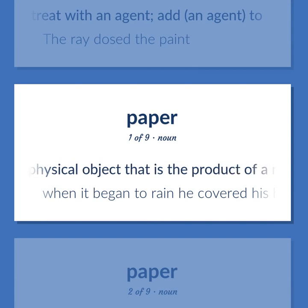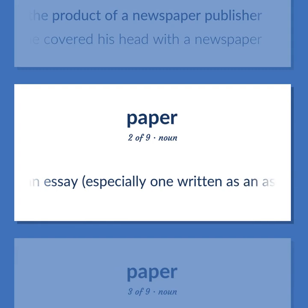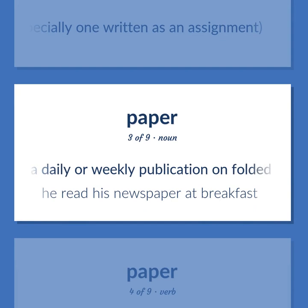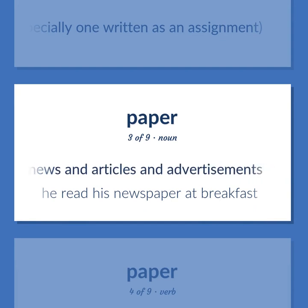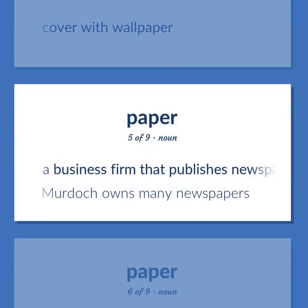Newspaper: the physical object that is the product of a newspaper publisher. When it began to rain, he covered his head with a newspaper. An essay, especially one written as an assignment. A daily or weekly publication on folded sheets containing news, articles, and advertisements. He read his newspaper at breakfast. Cover with wallpaper. A business firm that publishes newspapers. Murdoch owns many newspapers.